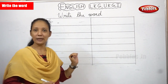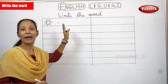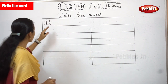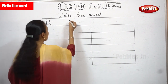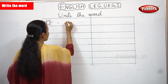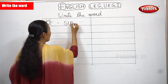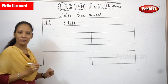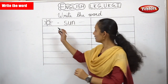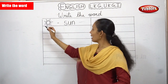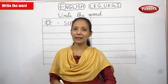When you teach your children, you can ask them to draw the picture and also write the spelling for that particular picture. So now the children can draw a sun. What is the spelling for sun? The spelling is S-U-N. Sun. You can learn to draw and also write the spelling.